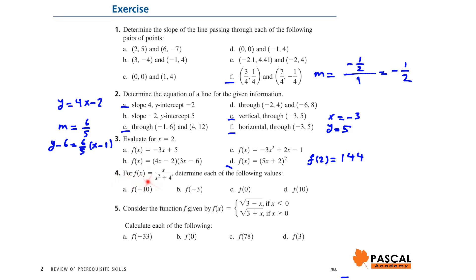Question 4: For f(x) equals x over (x² plus 4), determine each of the following values. f(negative 10): if we plug negative 10 into the given function, we have negative 10 over (100 plus 4), which is negative 10 over 104, giving negative 5 over 52. f(0) is 0 over 4, which is 0.